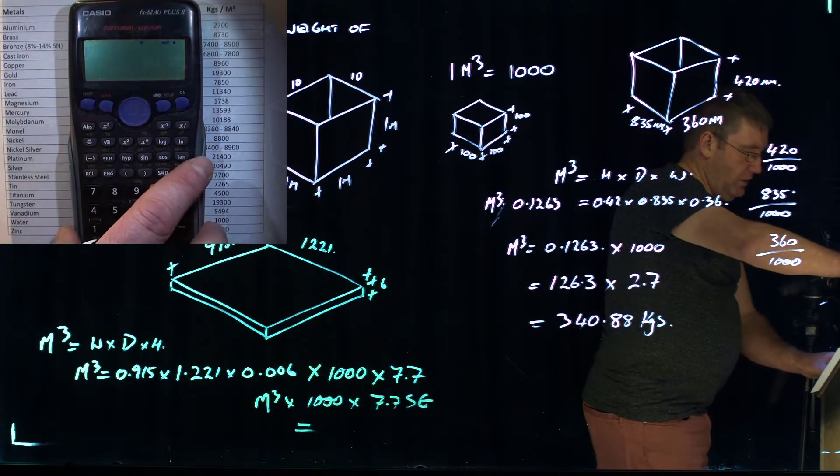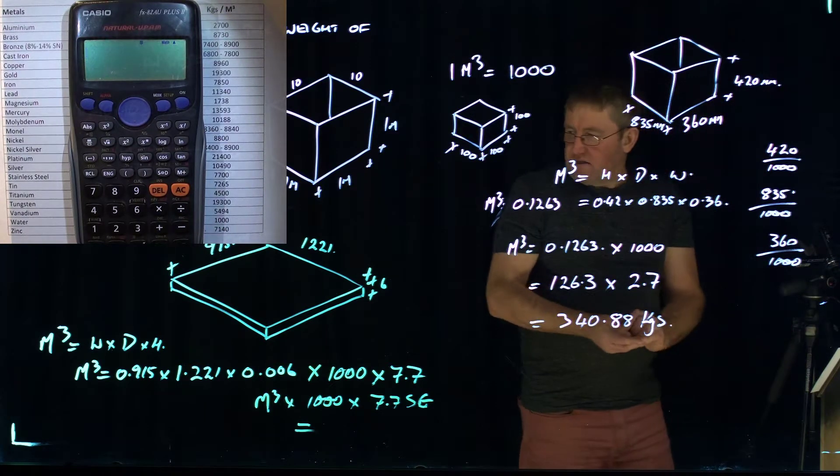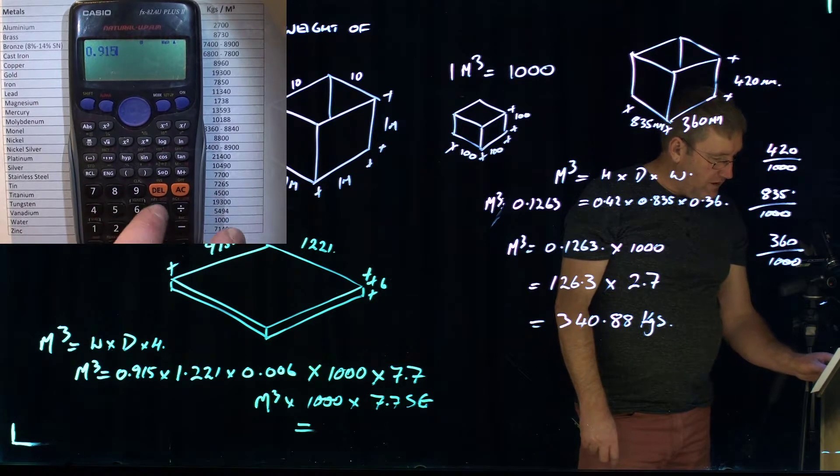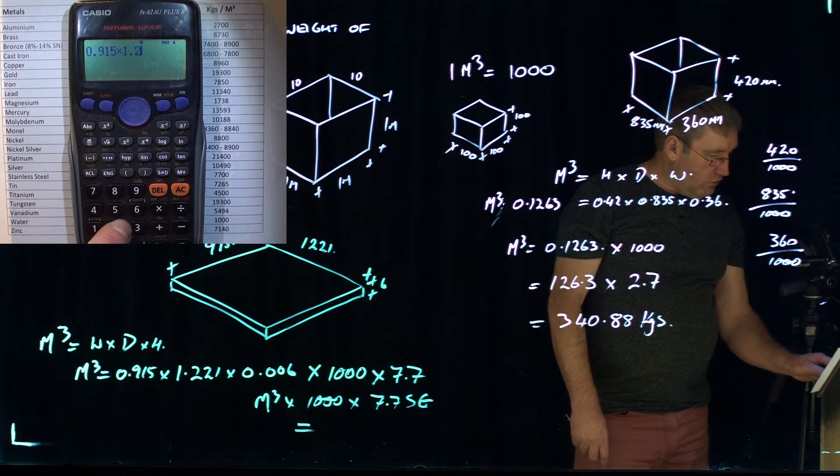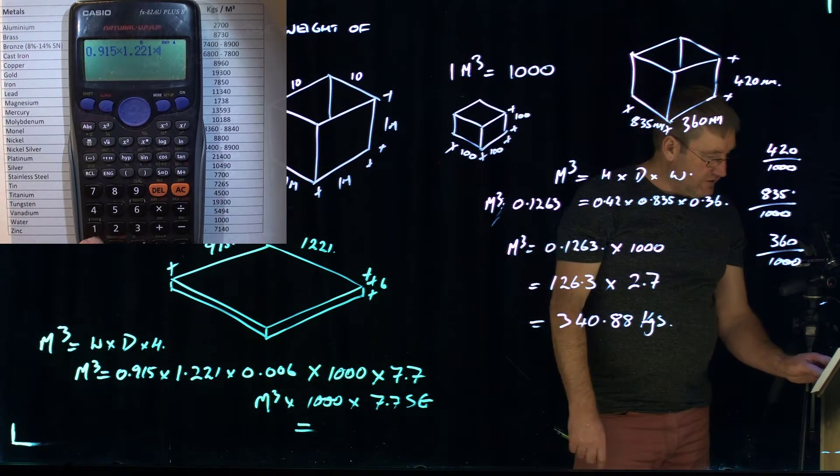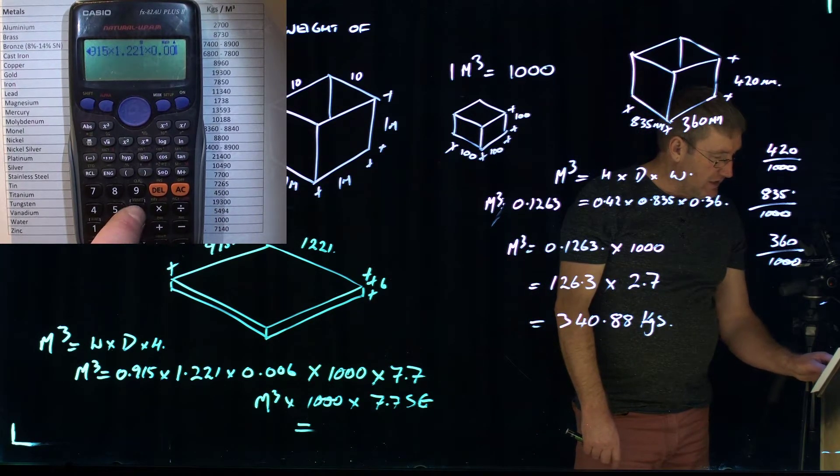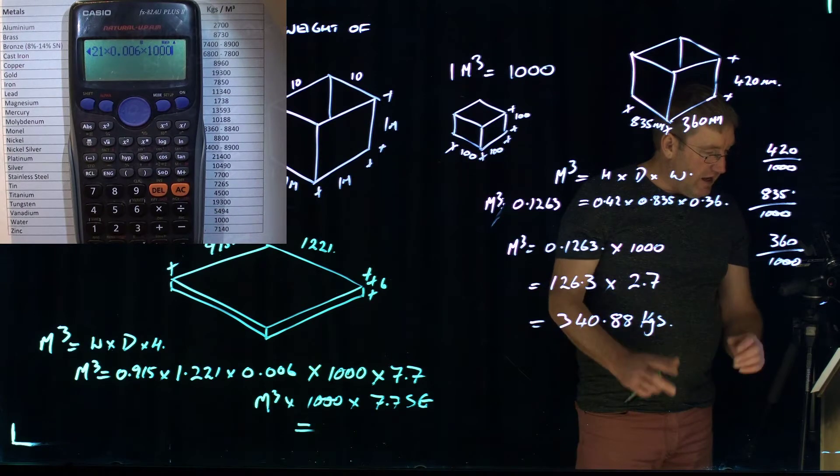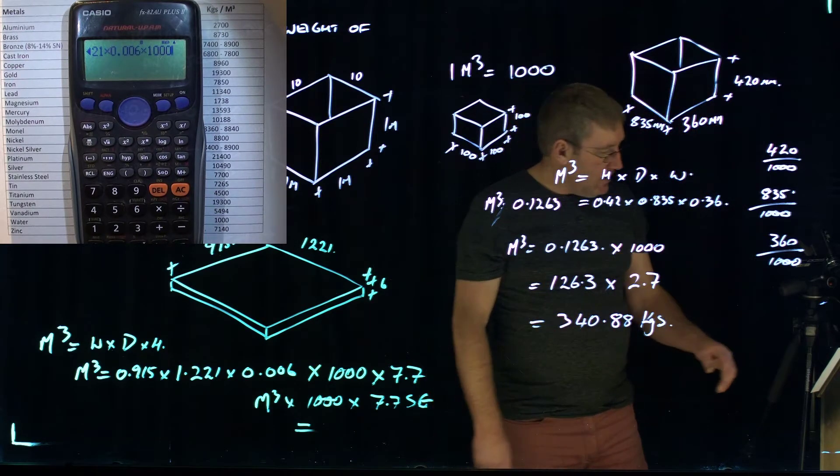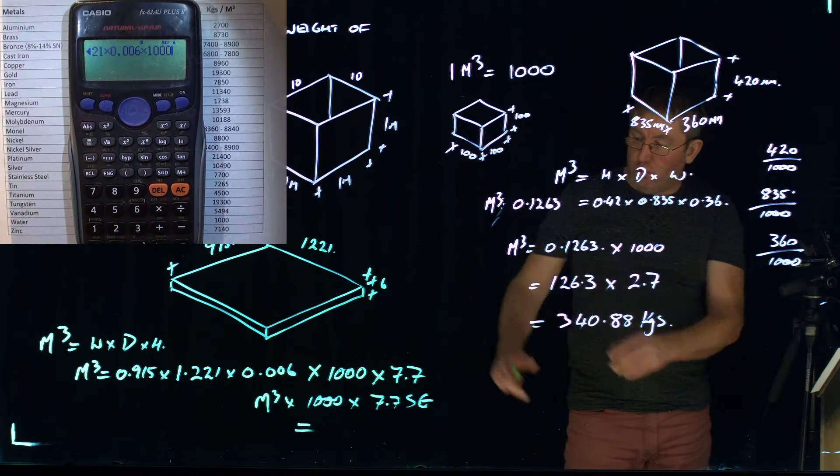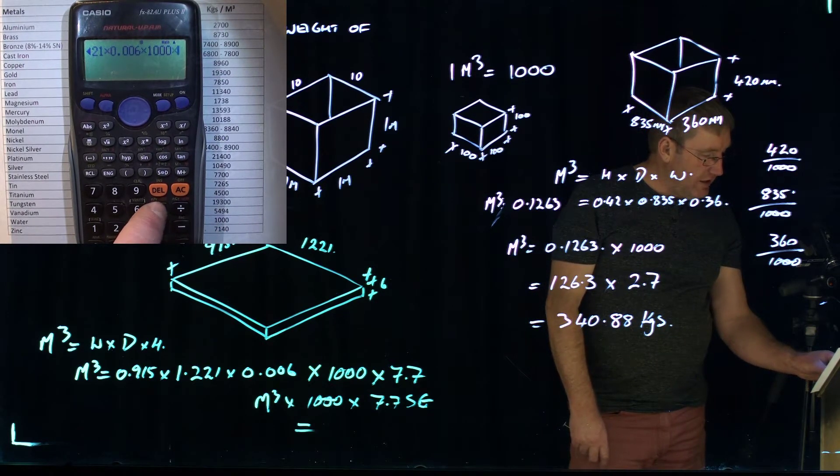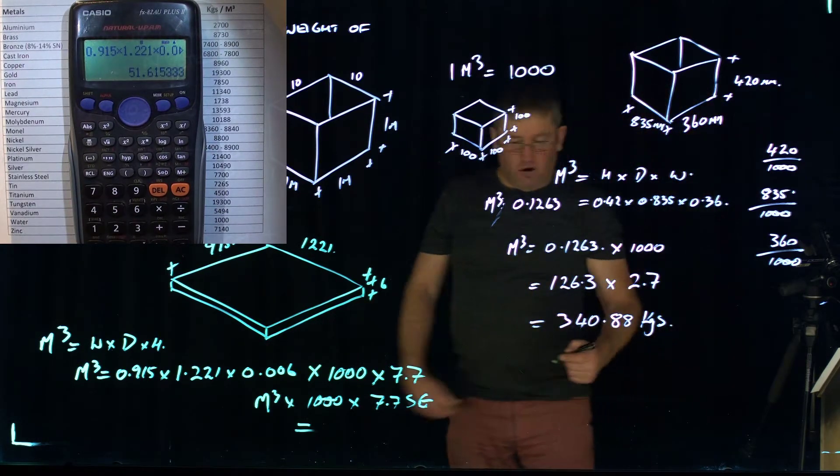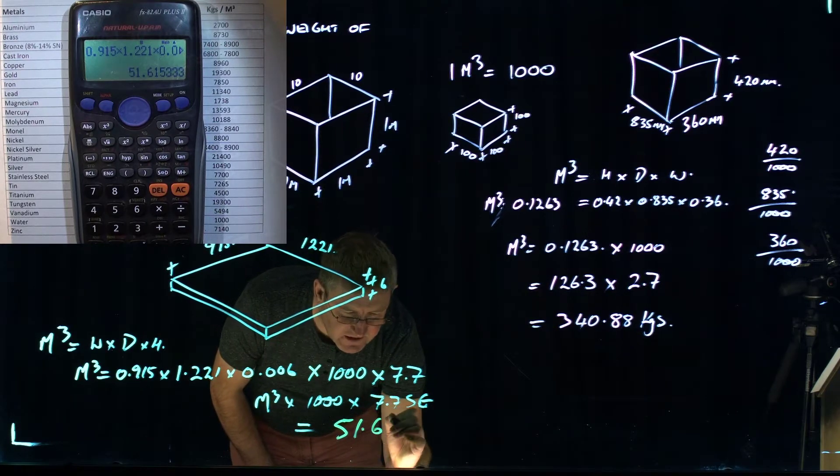So you can actually do the whole thing in one process. We've got 0.915 times 1.221 times the thickness of 6 millimeters, which is 0.006. We times that by 1,000 because that would be the literage in a tank, a cubic meter square, and we're working out a portion of that. And then we times it by 7.7, and we get a weight there of 51.61 kilograms.